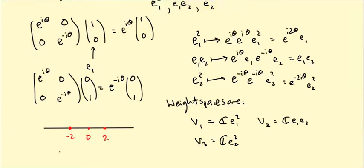The weight spaces are v1 is just spanned by e1 squared, v2 is spanned by e1 e2, and v3 is spanned by e2 squared, and the weights are two, zero, and minus two. So we get the same diagram as we did in the previous example. We get a weight space with weight minus two, a weight space with weight zero, and a weight space with weight two. Now we'll see later this is enough to tell us these two representations are actually isomorphic.